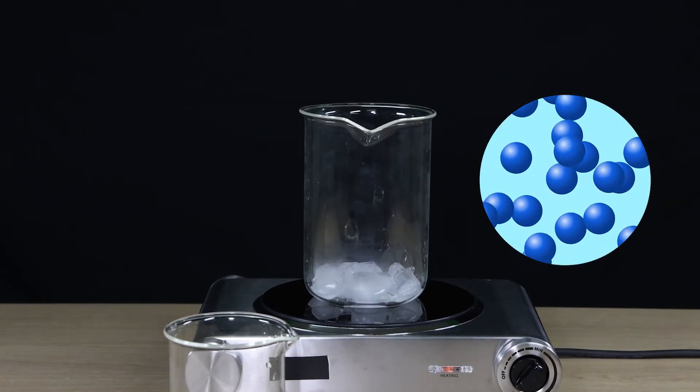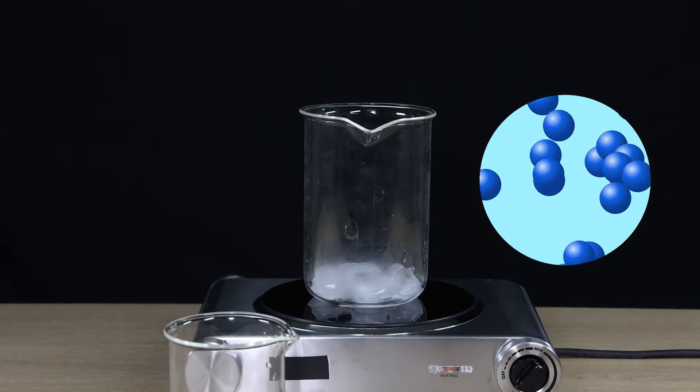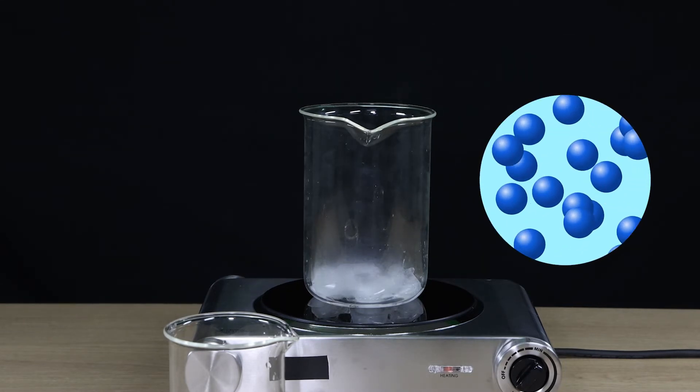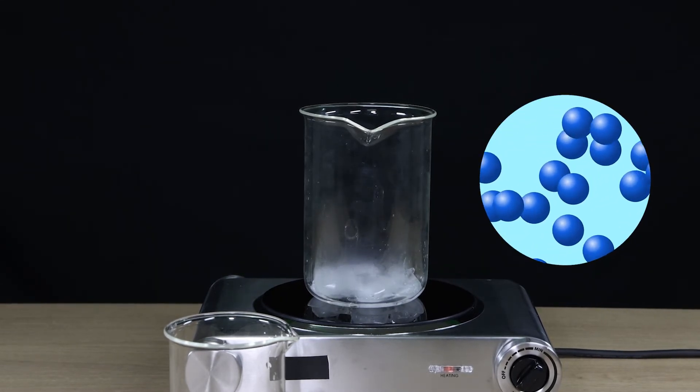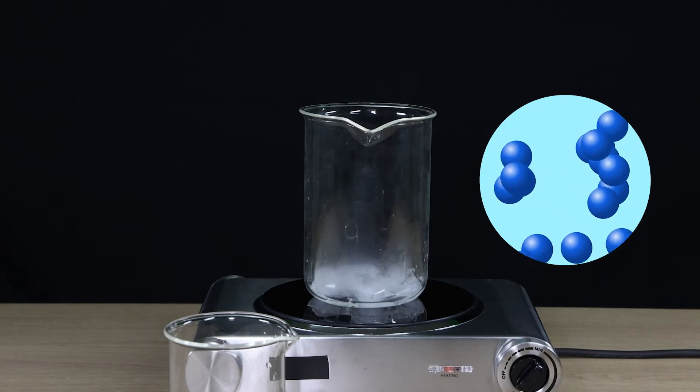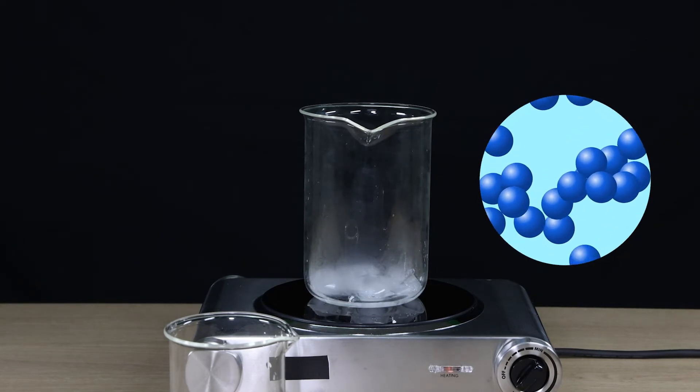Compared to a solid, the particles that make up a liquid are less tightly packed together. They are free to slide past each other. This property allows liquids to flow and change shape.